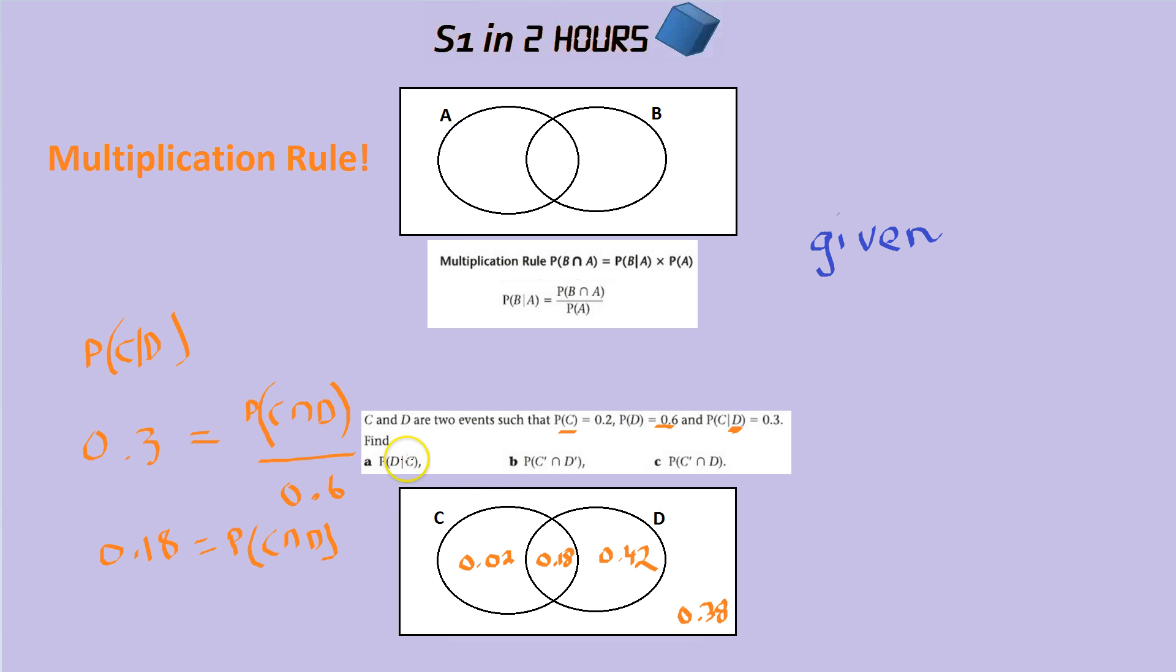The probability of D given C. Now you might want to pause the video, try to work that out yourself, and then come back and see how I do it. So I reckon for A, the probability of D given C is going to be the probability of the overlap, which is D and C.